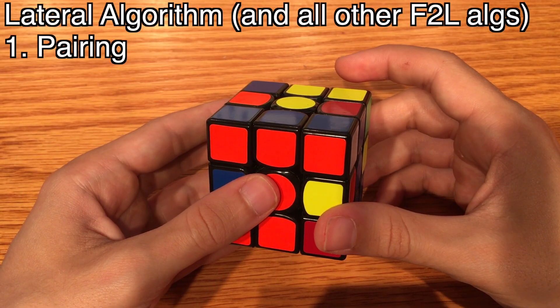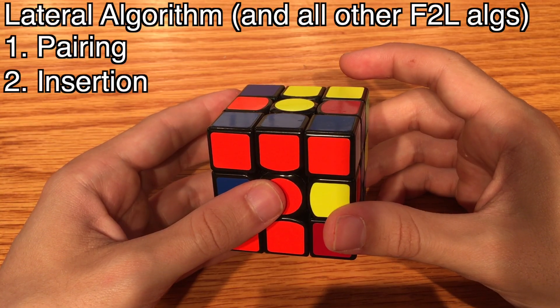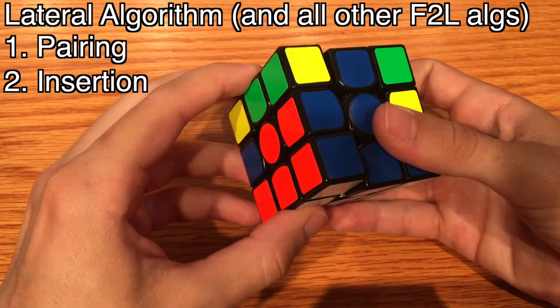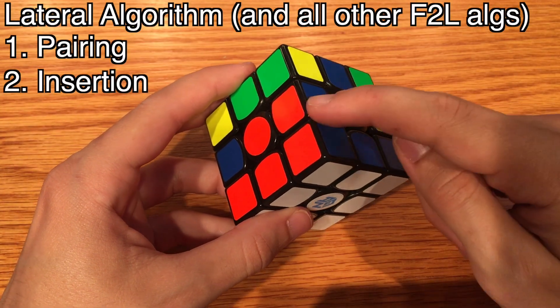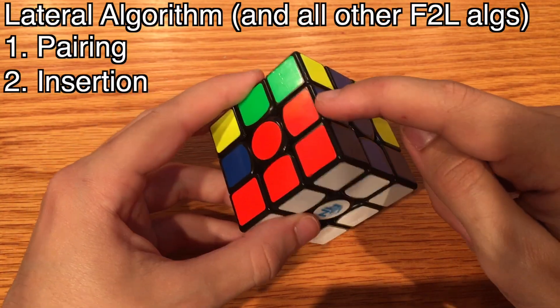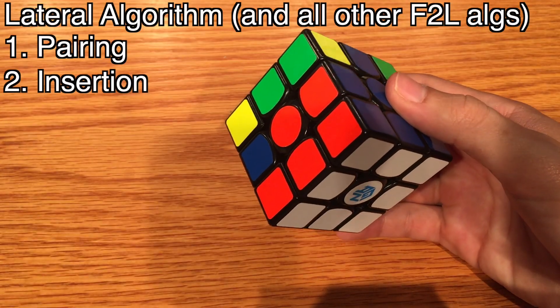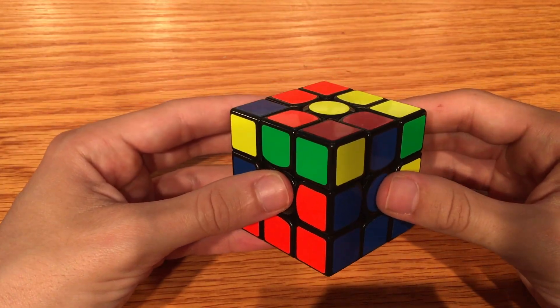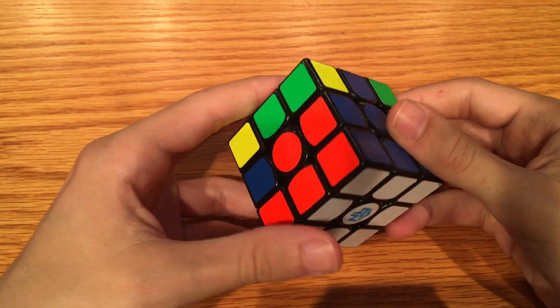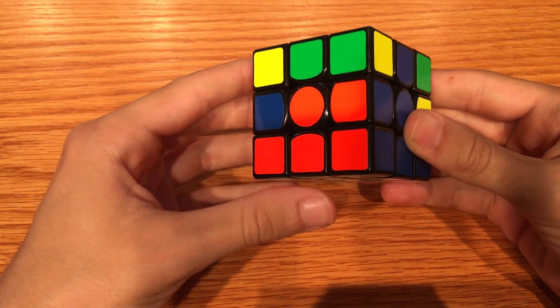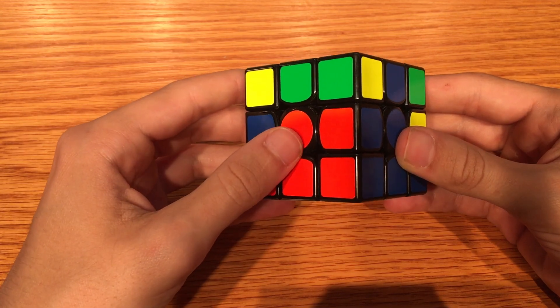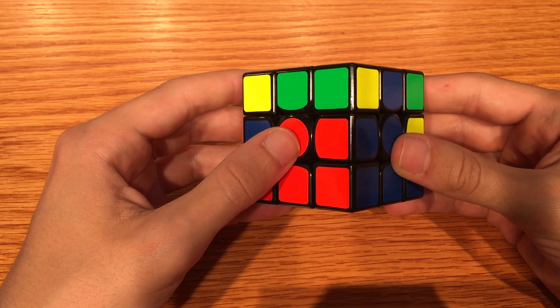The second and last section of the algorithm, called insertion, re-solves the white corner but in a different way, so that the lateral is also solved. Therefore, the pair is solved. So with beginner's method, you solve your four white corners, only to take them all out again one by one later, so that you can pair them with their laterals and then re-insert. Isn't this a bit redundant?